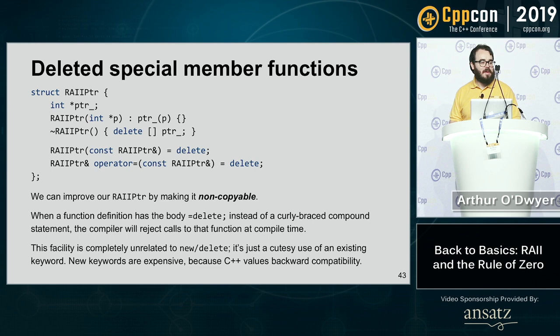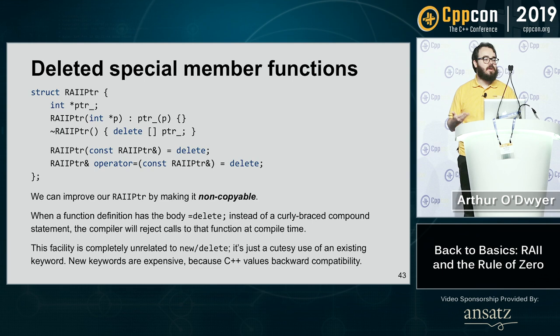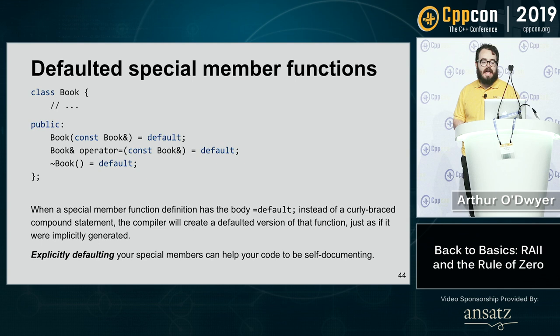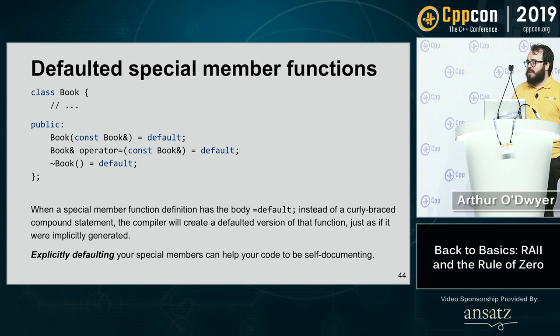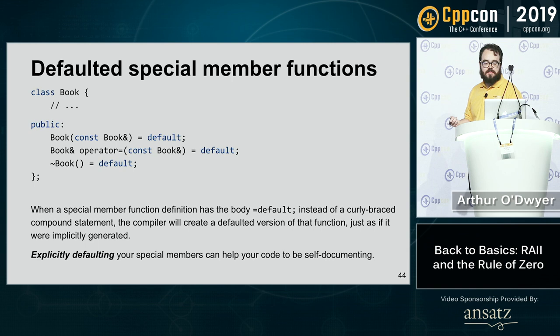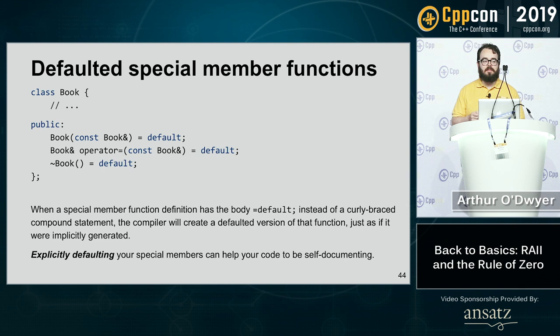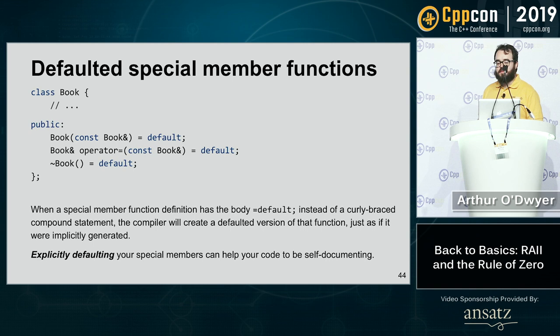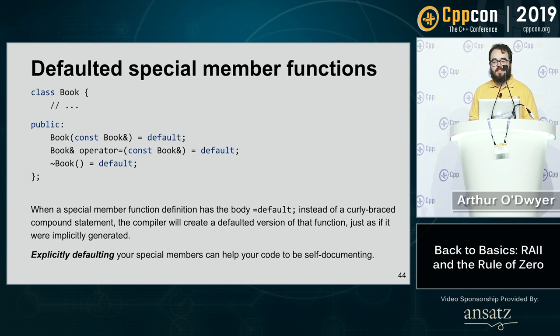We can also explicitly default a special member function using = default. The compiler will then create a defaulted version of that function just as if it had been implicitly generated — even if it would not have generated it implicitly. Explicitly defaulting your special members can help your code be self-documenting: it says you considered whether you needed a copy constructor or destructor, and decided the default ones work fine.